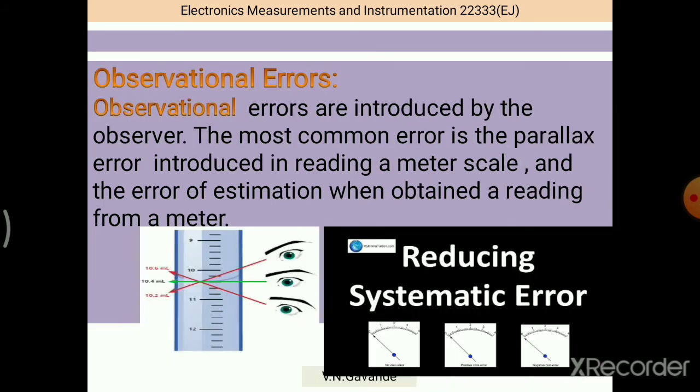Then third one: observational errors. The word observational means relative to observe. Again, the human beings will come into the picture. That means these errors are occurring due to the observing and recording the errors. The most common error is the parallax error introduced in reading a meter scale, and the reading of estimation when obtained a reading from the analog meter.